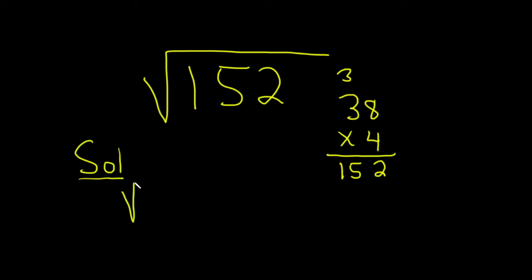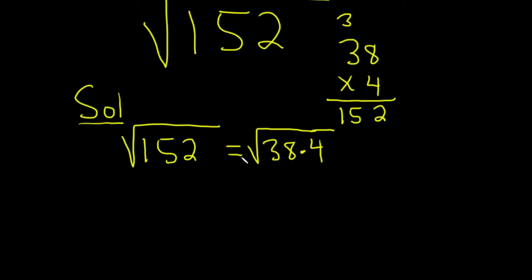Okay, let's take the 152 and we can write this as the square root of 38 times 4. And then we can break this up into two square roots. This is the square root of 38, square root of 4.